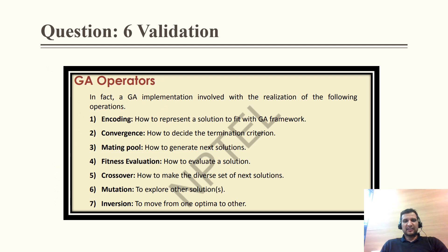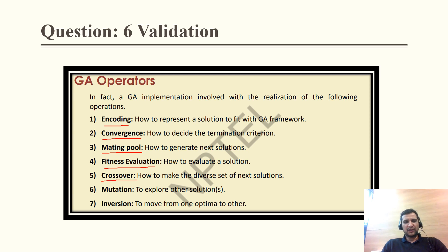For validation, there are seven GA operators: encoding (not decoding), convergence, mating pool, fitness evaluation, crossover, mutation, and inversion. So decoding is not a GA operator — it is encoding that is the operation.